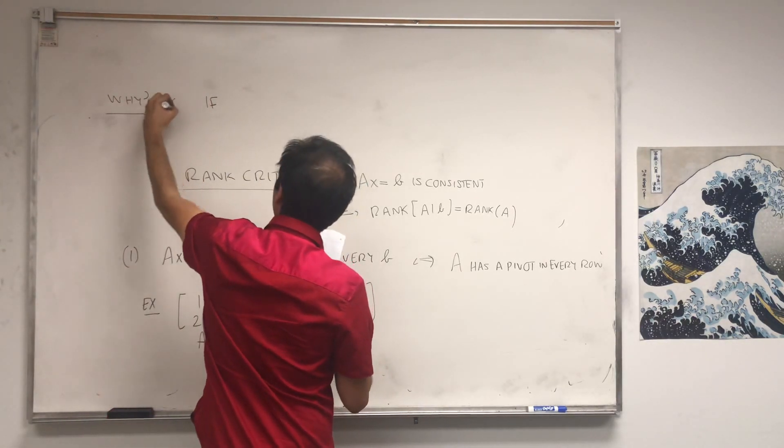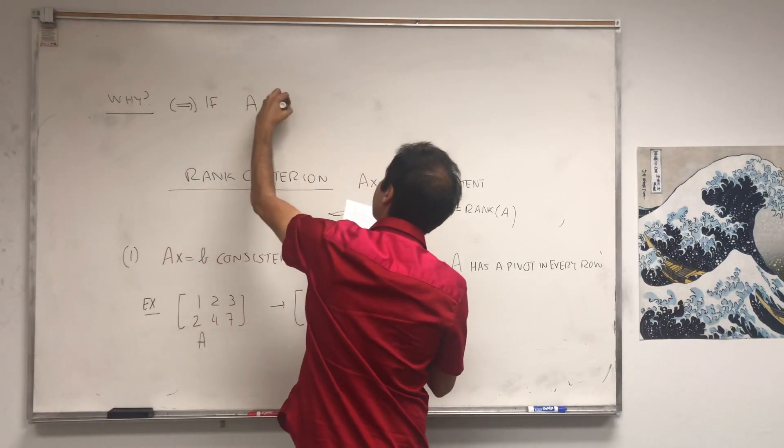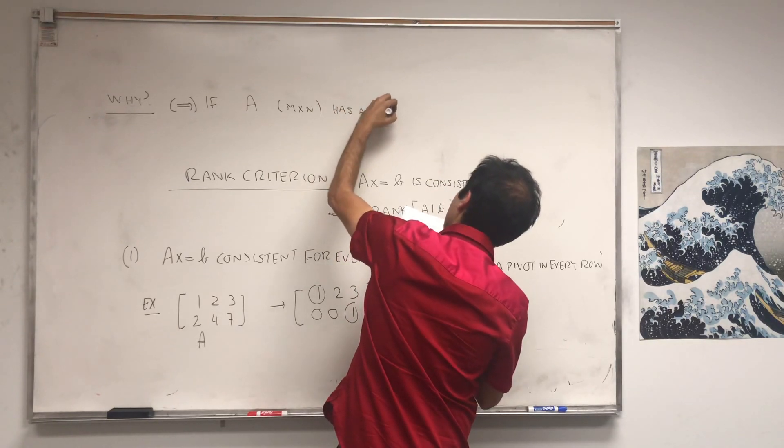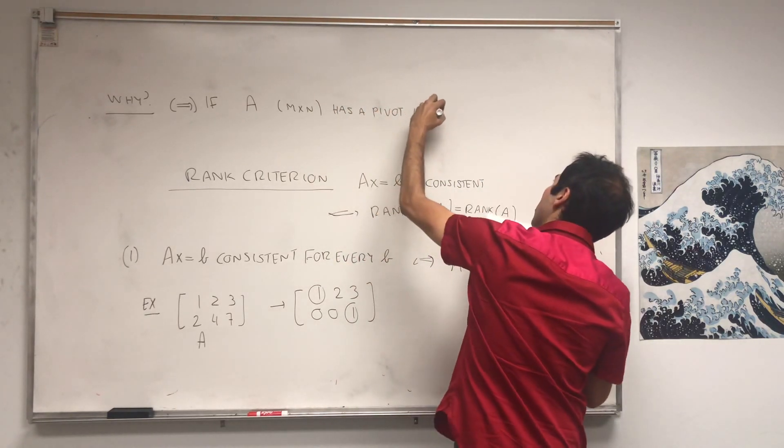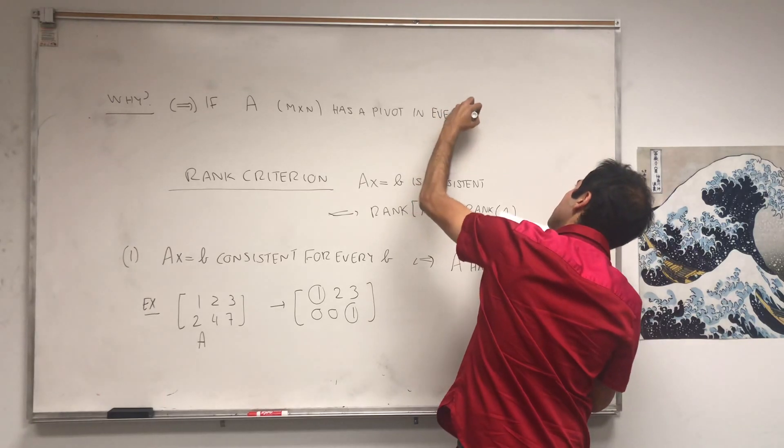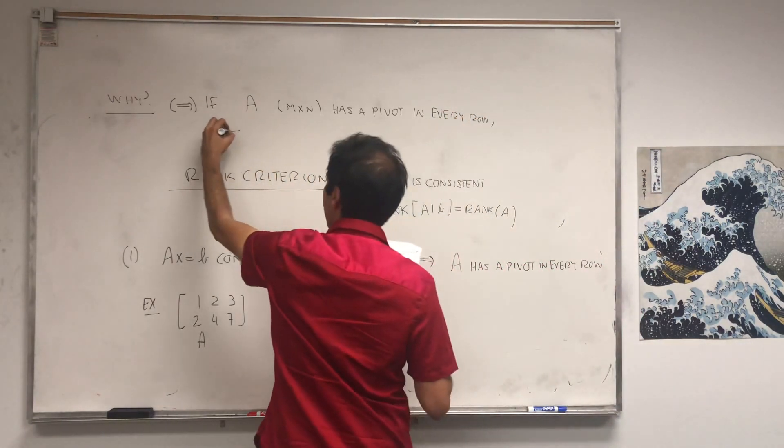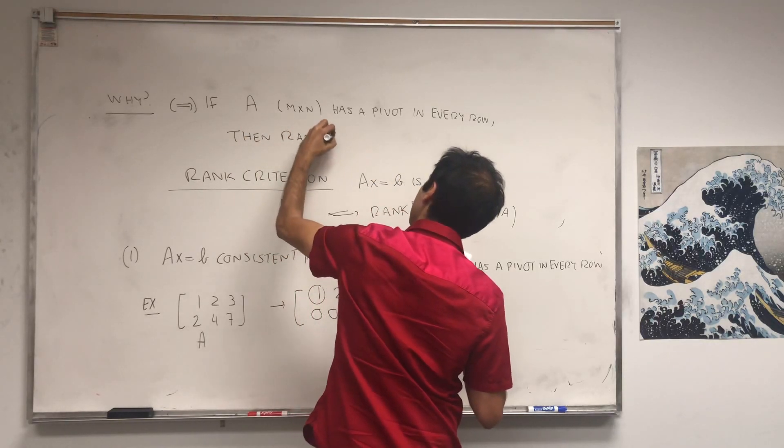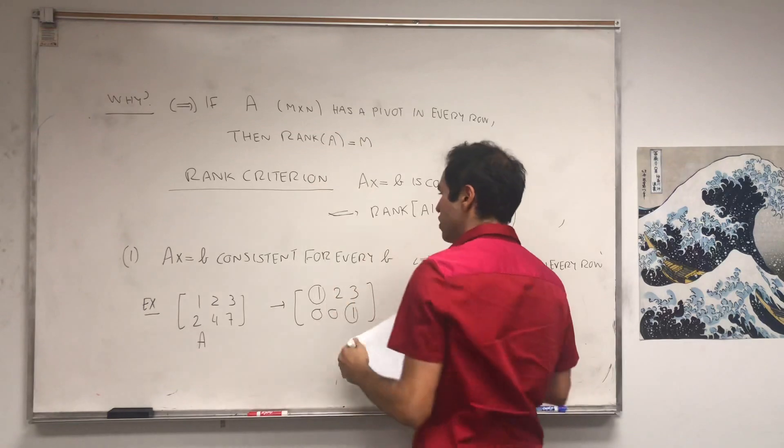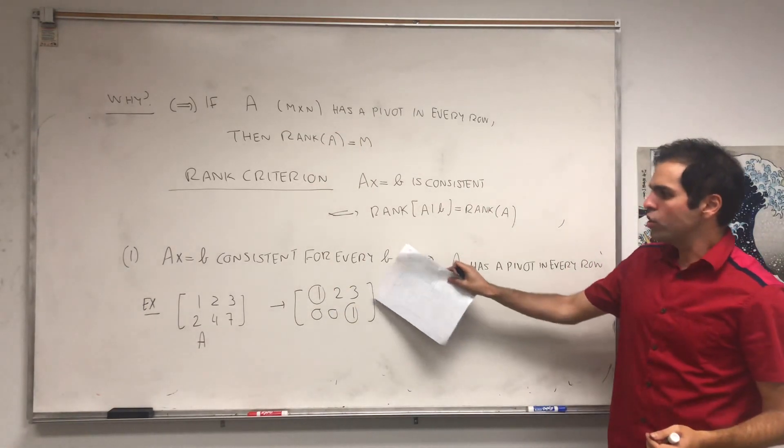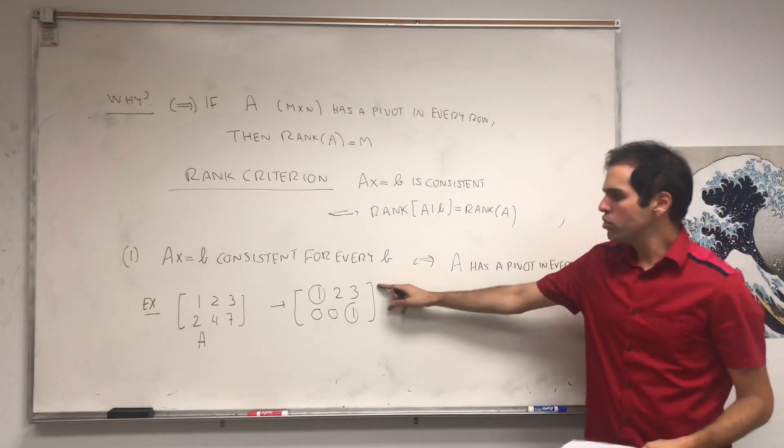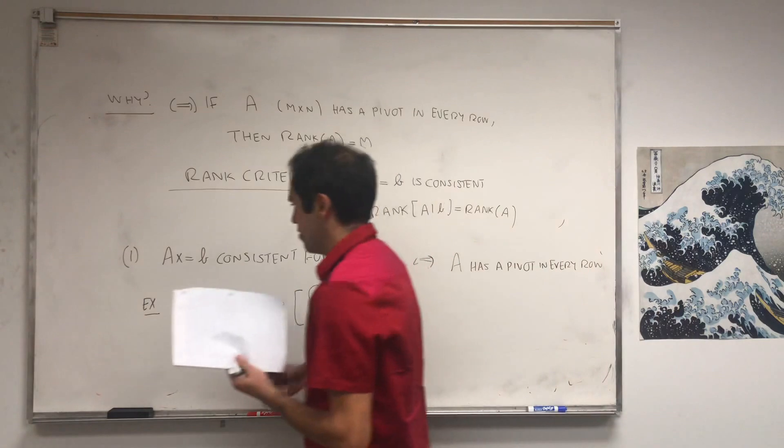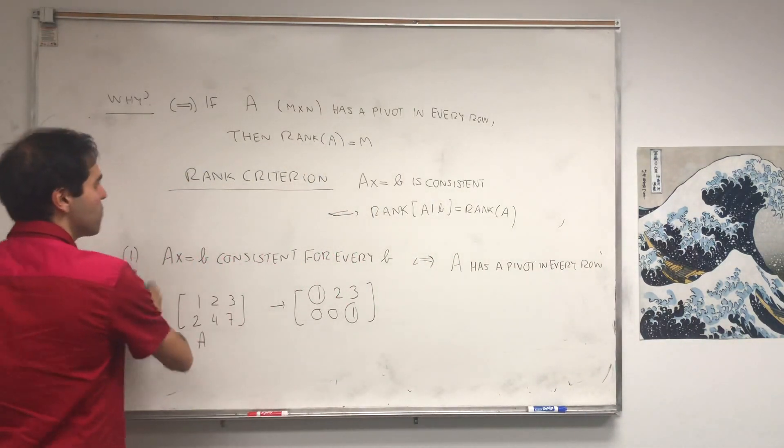Look, first of all, forward direction. If A, let's say M by N, has a pivot in every row, then rank of A has to be M. For example here, we have a 2 by 3 matrix, there's a pivot in every row, so the rank is just equal to 2 in this case.